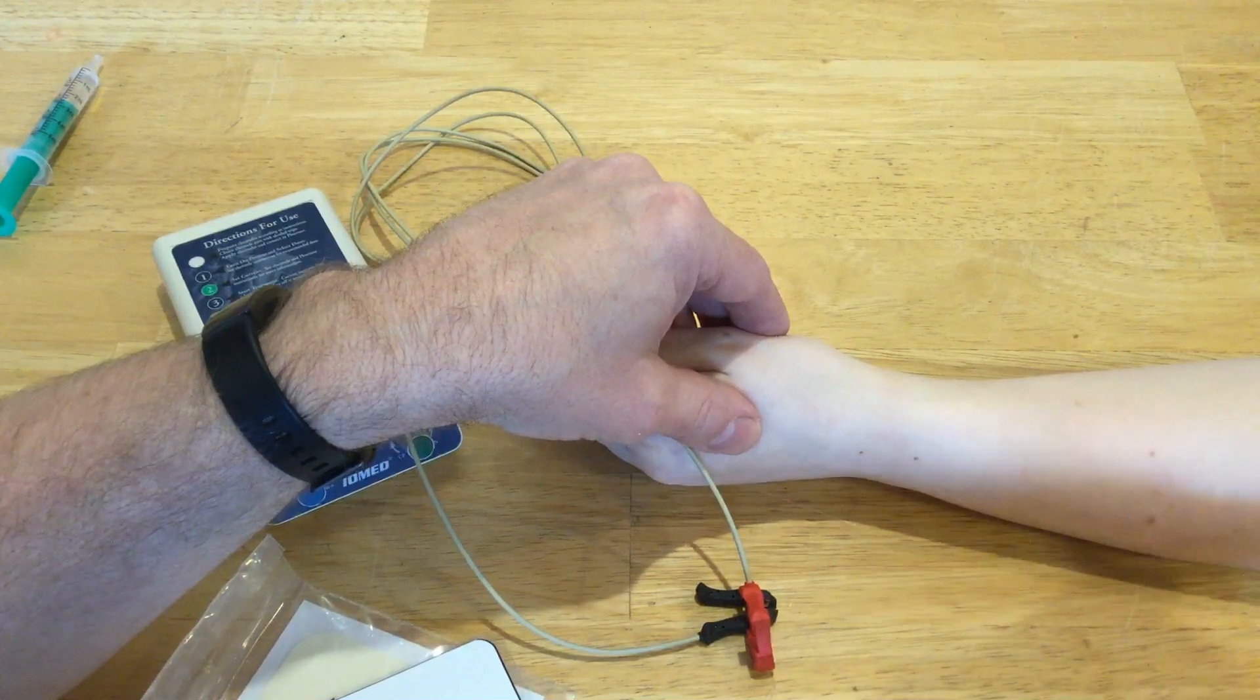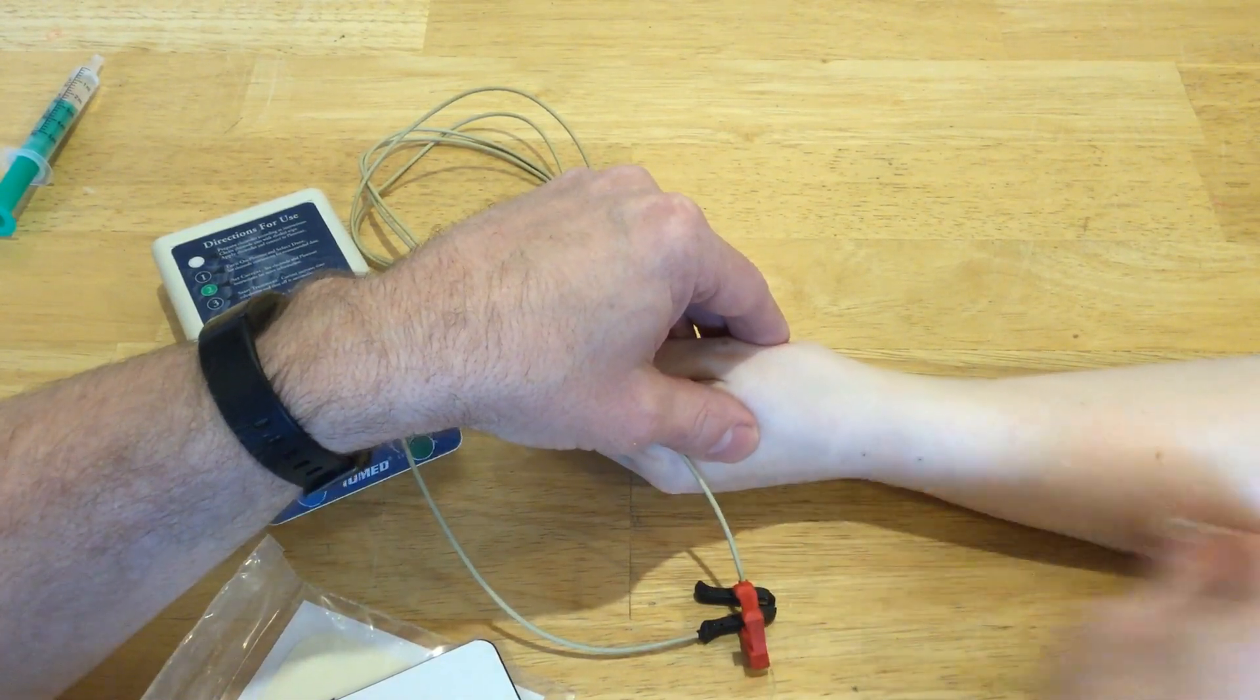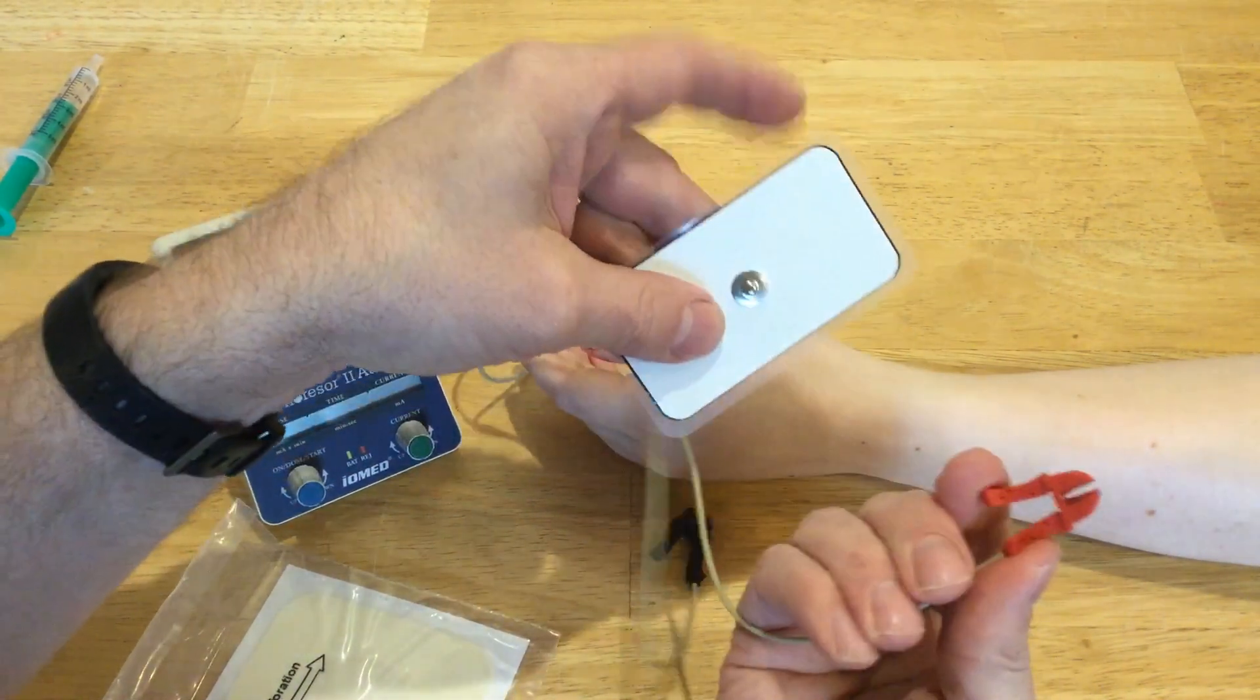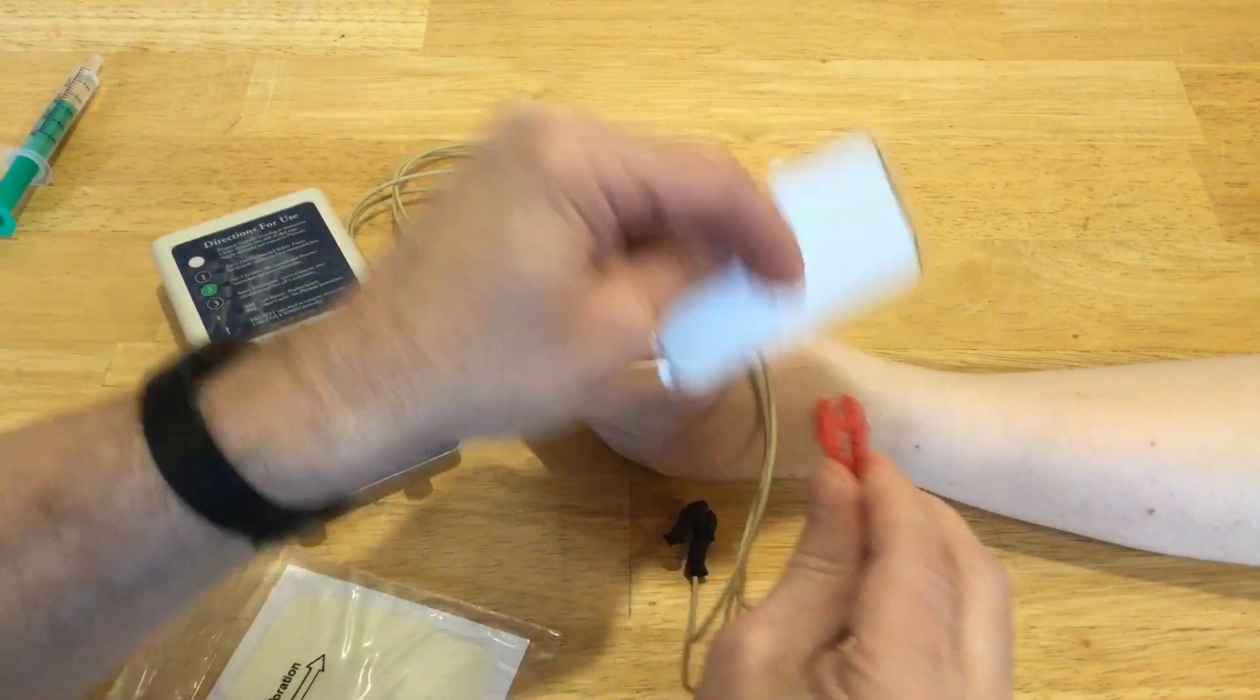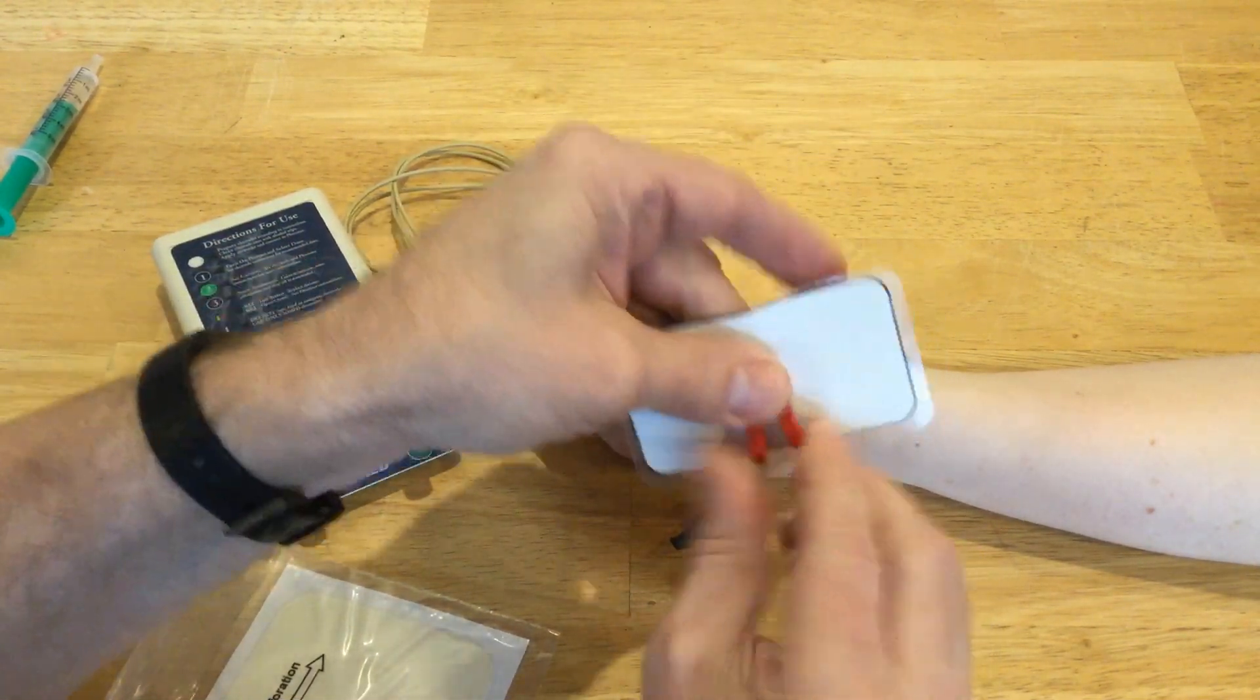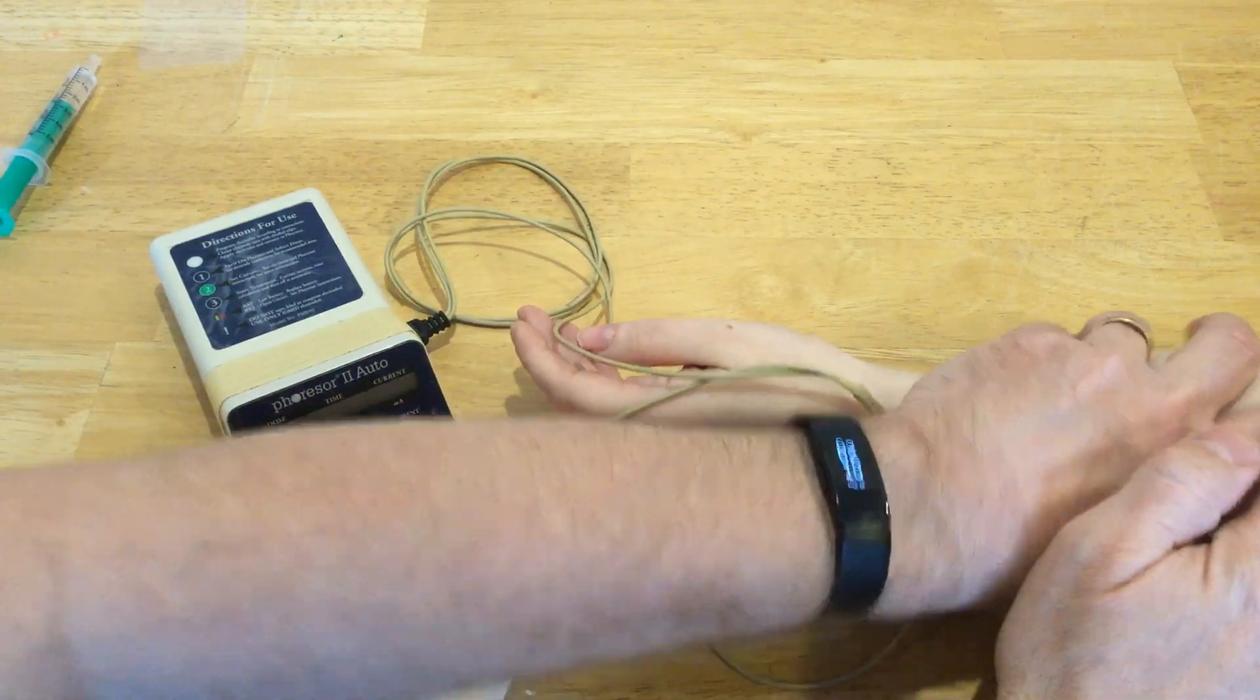For my dispersive or inactive electrode, I'm just going to put that somewhere else, more proximal. These just clip on to the electrode. You have to make sure you get it on right - if you put it on upside down, it will not connect and won't conduct. I'm just going to take my dispersive one and put that somewhere more proximal.